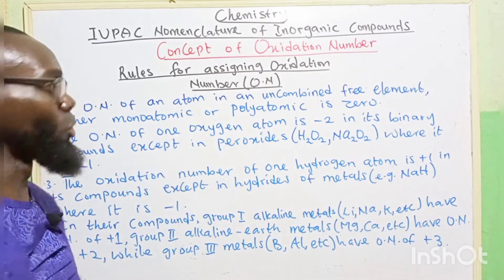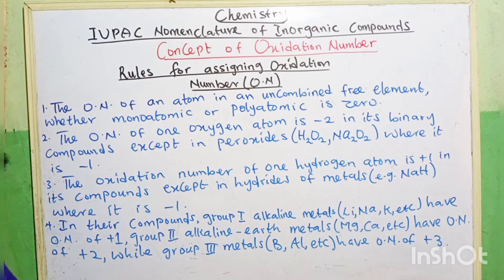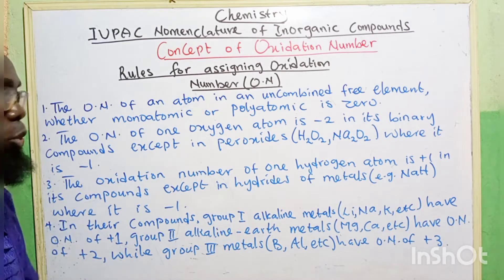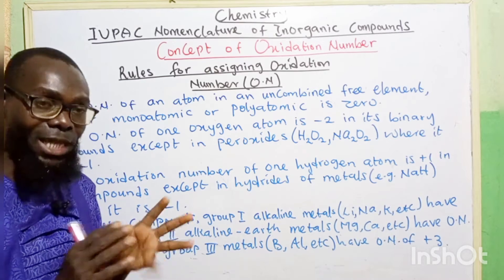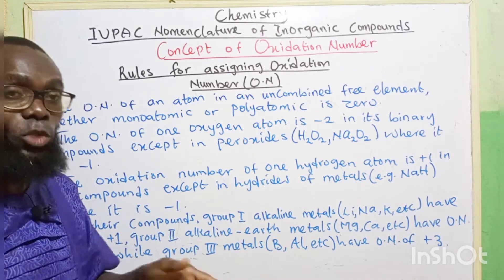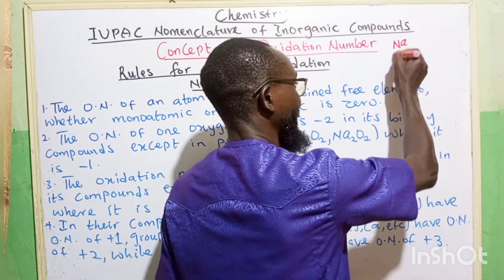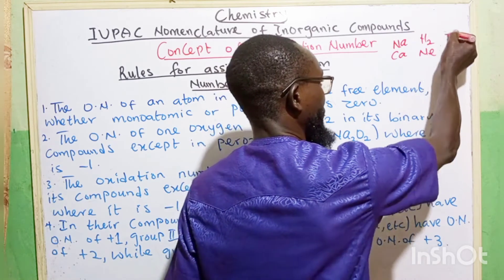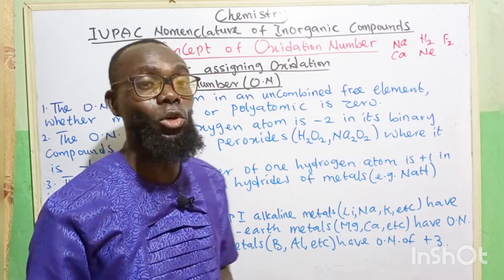Now we want to look at rules for assigning oxidation number. Number one: the oxidation number of an atom in an uncombined free state, whether monoatomic or polyatomic, is zero. When they are in a free state — when they are alone — their oxidation number is always equal to zero. For instance, sodium (Na), calcium, hydrogen, neon, fluorine — all these are in their free states, so their oxidation number equals zero.